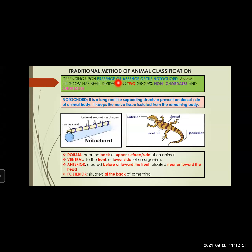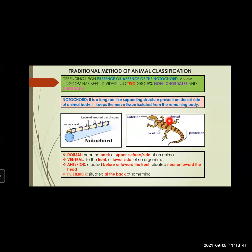When we say presence or absence of notochord, what exactly is notochord? Notochord is a long rod-like supporting structure present on the dorsal side of the animal body. It keeps the nerve tissue isolated from the remaining body. Dorsal side — as you can see in the picture — is near the back or upper side of an animal. Ventral is the front or lower side of the organism. Anterior is situated before or towards the front, near or toward the head. Posterior is situated at the back. You should know the meaning of dorsal, ventral, anterior, and posterior because further when we study different phylums, you will learn about these terms as characteristics.